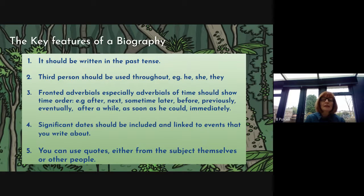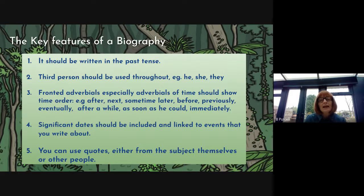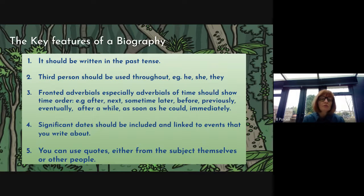You should include significant dates and they should be linked to the events that you write about. For example, you'll be writing about a journey that Charles Darwin took to the Galapagos Islands, so you should include the date when he started off on his voyage. And you can use quotes either from the subject themselves or other people — you could find a quote about how he felt about something at some point in his life and include that in your biography.